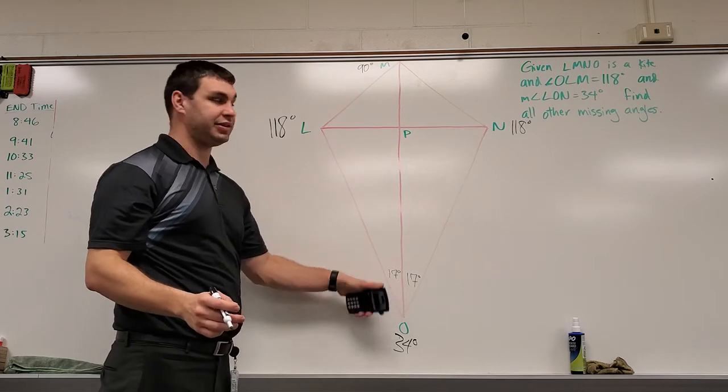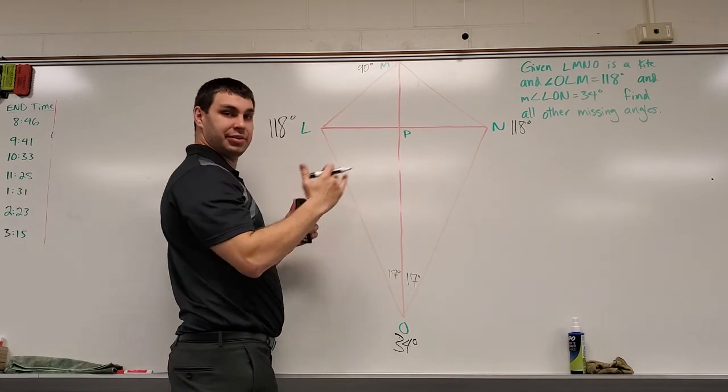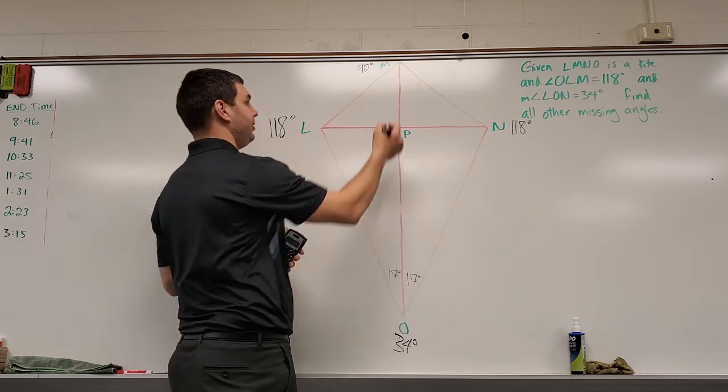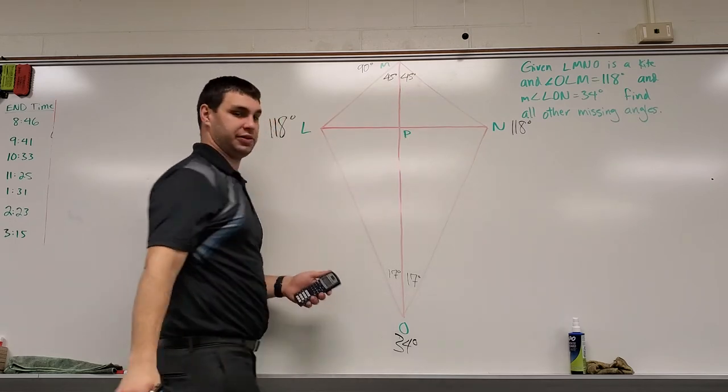All right, so this top angle up here is going to be 90 degrees, and more than that, just like this bottom one was cut in half, this top one also, if you cut 90 in half, those are going to be exactly in half. 90 divided by 2 is 45 degrees for each of those, 45 and 45.